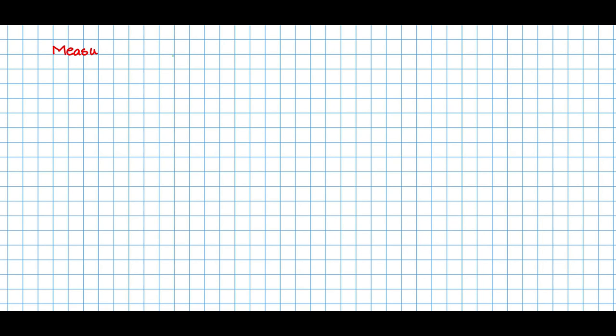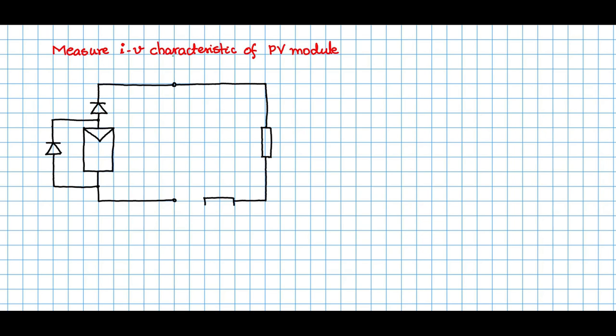Let us now consider the first problem of how to measure IV characteristic of a PV panel, a PV module. Let us draw the circuit. Have this PV module, put the protection diodes - the series protection, the bypass diode, and the parallel protection. To this PV module let us connect an external load, and in series with the load we will also connect a small resistance called Rsense to measure the current. The voltage across this we will call Vt across R_naught, and R_naught is a variable resistance. It could be a wire wound rheostat.